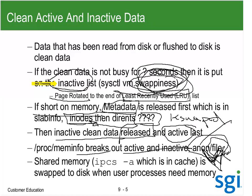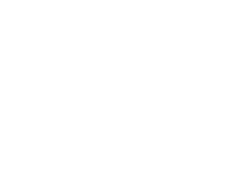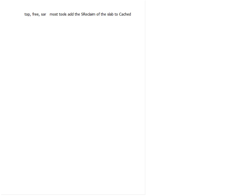Swappiness is going to control the balance between anon and file. Be careful here - let me go to my whiteboard. So let's repeat this: top, free, SAR - most tools add the SReclaimable portion of the slab to cached, thinking it's reclaimable. But in meminfo, slab is separate.